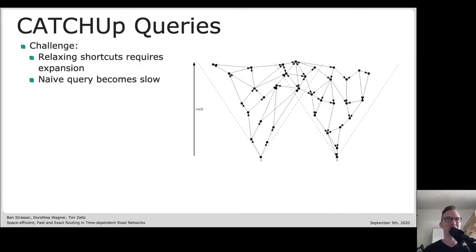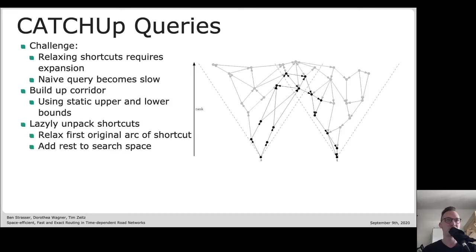For the query we need also to do a bunch of things to achieve good performance. If we do a naive query and just start our bidirectional Dijkstra and completely unpack shortcuts on demand to evaluate the travel time, the query becomes rather slow because those unpacked shortcuts may have long paths and also sometimes paths may overlap. Rather we do two things to do less unpacking.